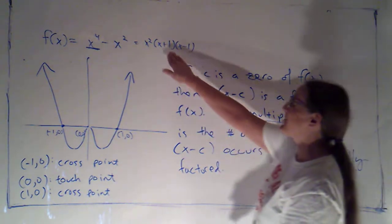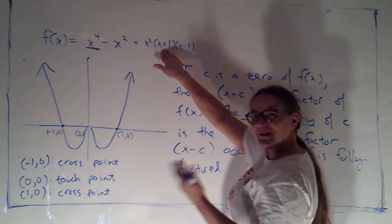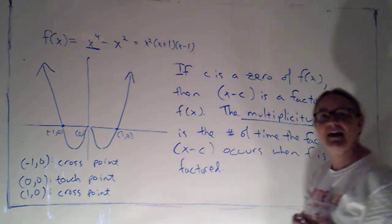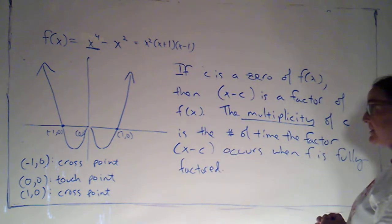Negative 1 was a zero. The corresponding factor was x minus negative 1, or x plus 1. That occurred once. So, that had a multiplicity of 1.